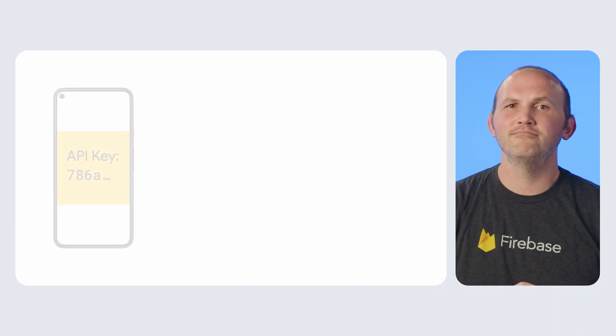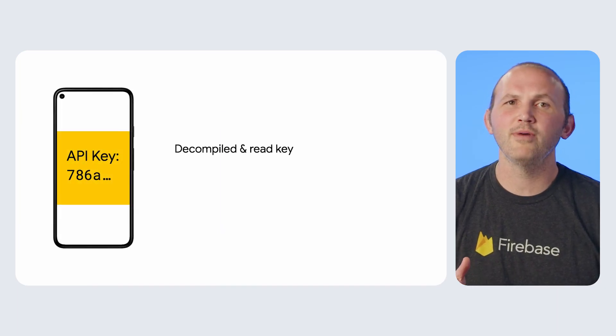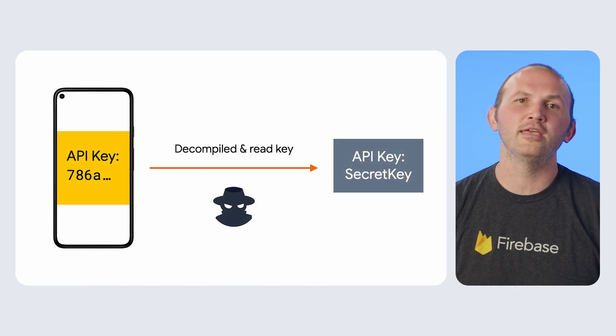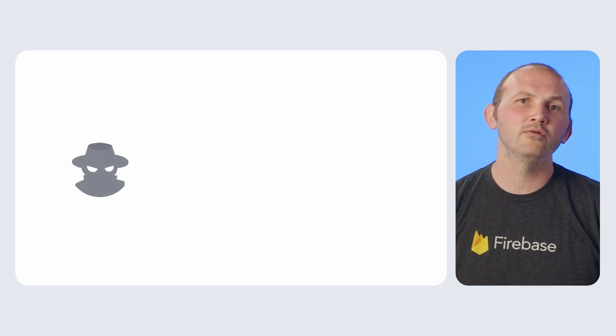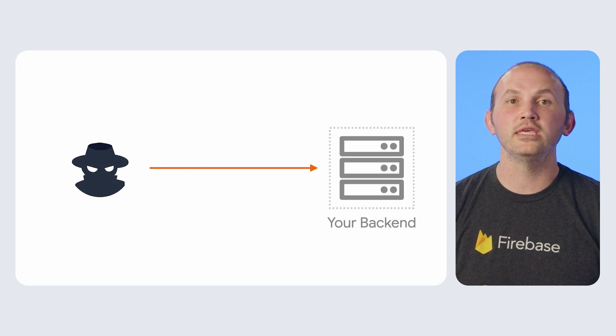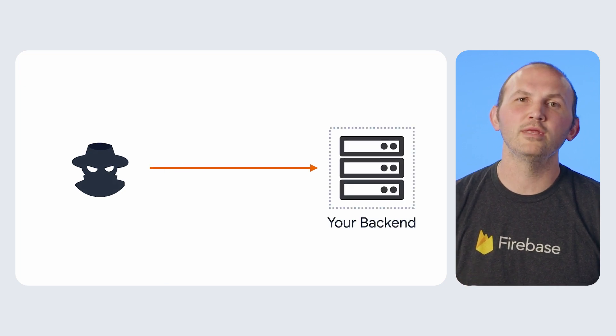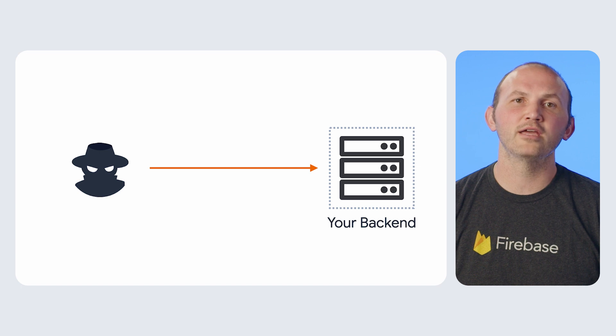You come up with a solution that allows your users access to your API through an API key. All pretty safe, right? Well, what if your clients start embedding your API key in their client apps? Then anyone can decompile the source code, find your API key, and make calls on the authorized client's behalf to your resources.